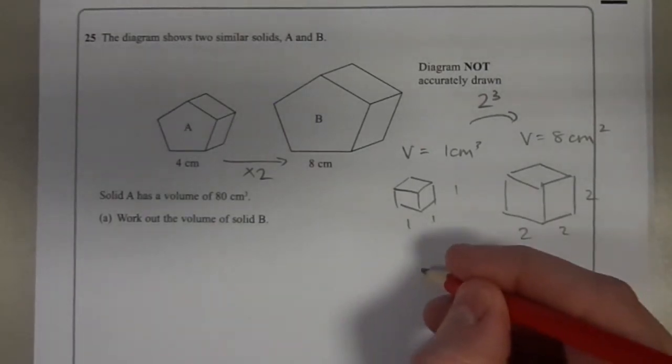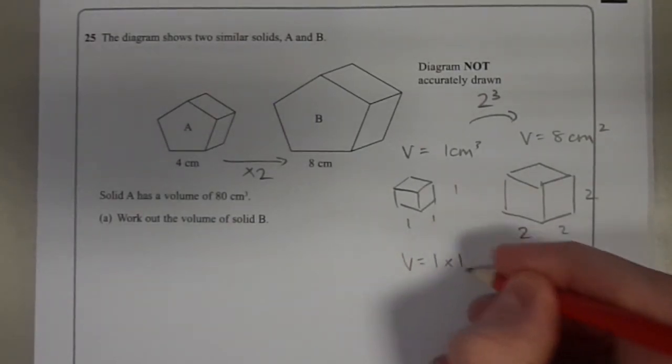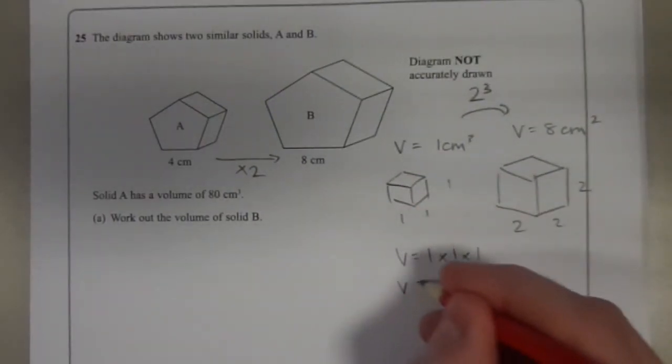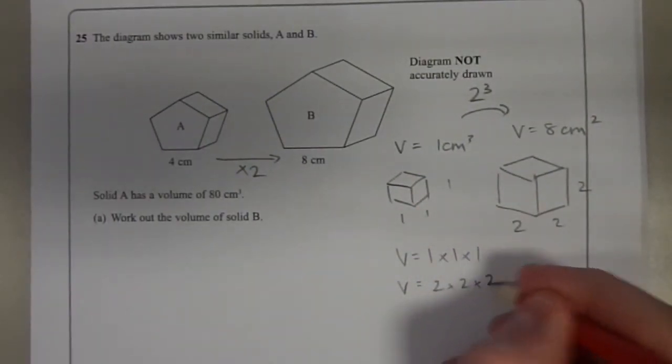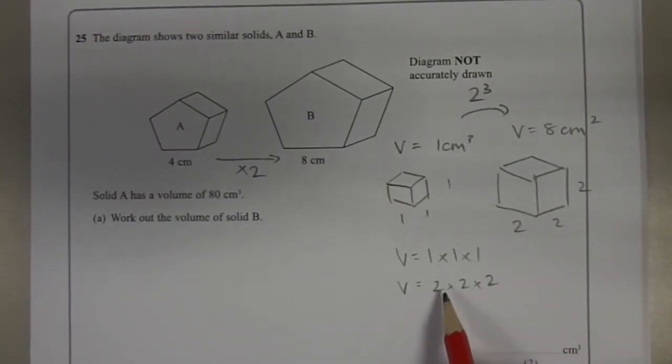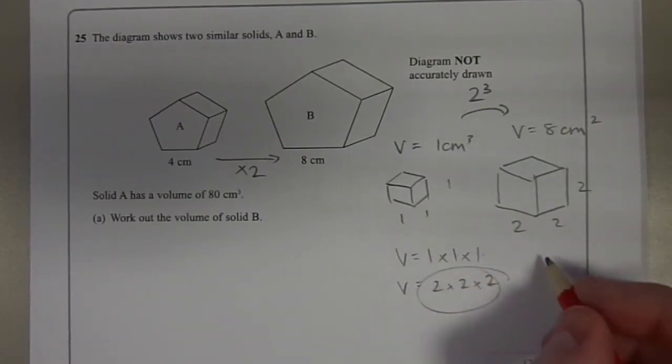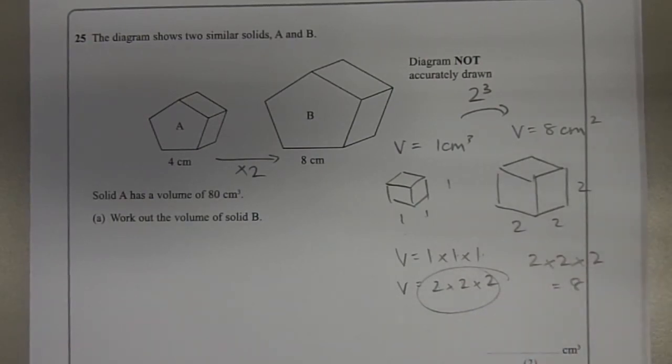The reason that's the case is because you're working out the volume of this one, and then the volume of the larger one. Compare each of these components with the smaller one. This is twice as big, this is twice as big, and this is twice as big. So that's why, altogether, the answer for this is 8 times as big.